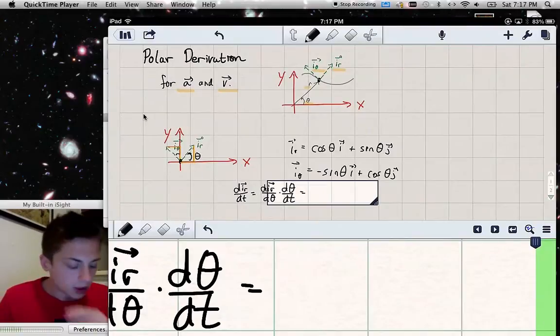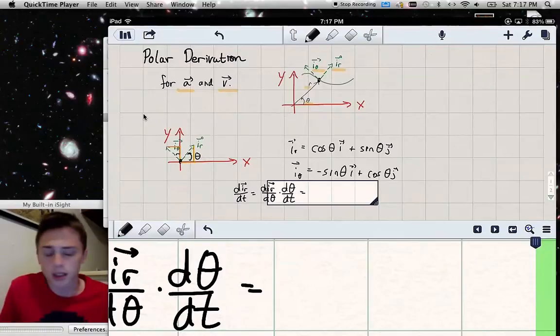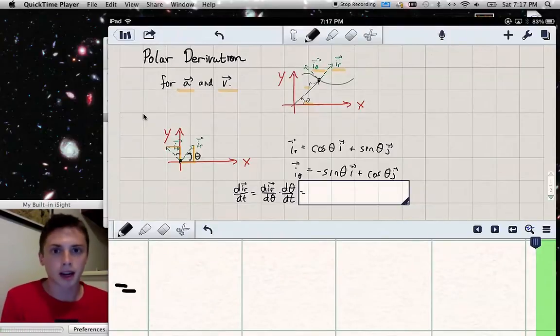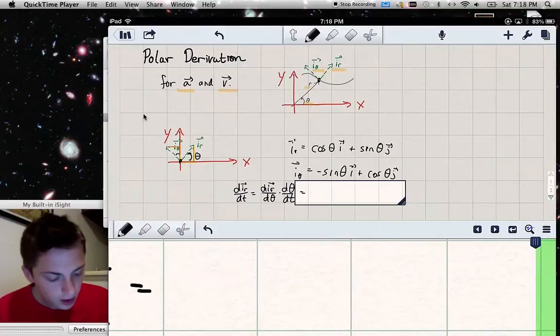So to differentiate cosine i plus sine j, we just differentiate the components because the unit vectors in Cartesian do not depend on time. So if you're in a coordinate system where the unit vectors depend on time, to take the derivative of these unit vectors, you'd want to express the unit vectors in terms of unit vectors that don't depend on time to ease the calculation. So if you do a path coordinate derivation for velocity and acceleration, then you'd want to do a similar sort of thing.